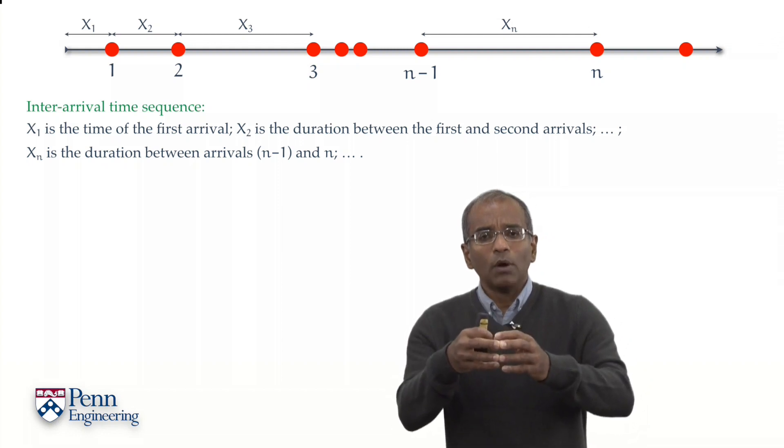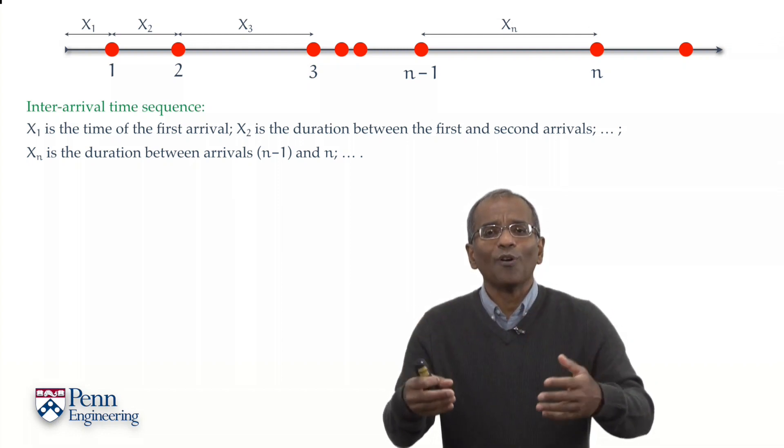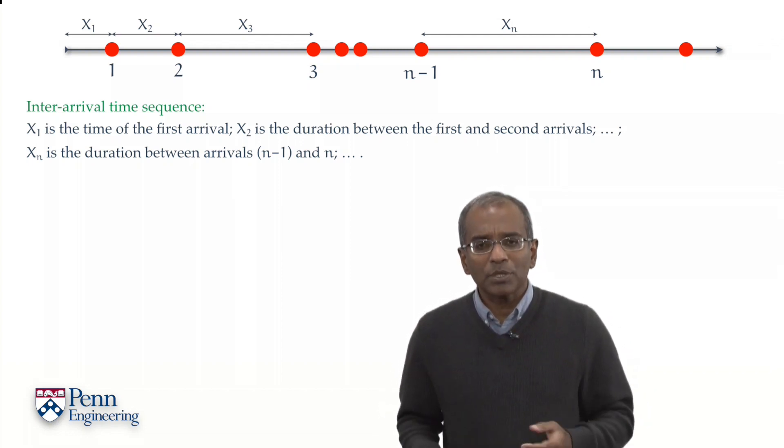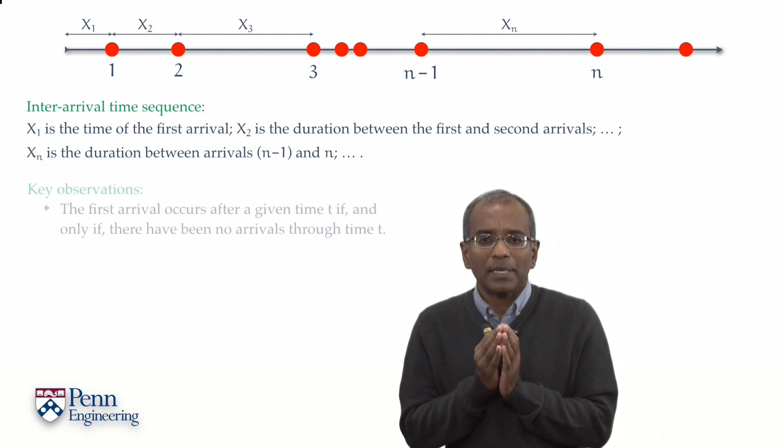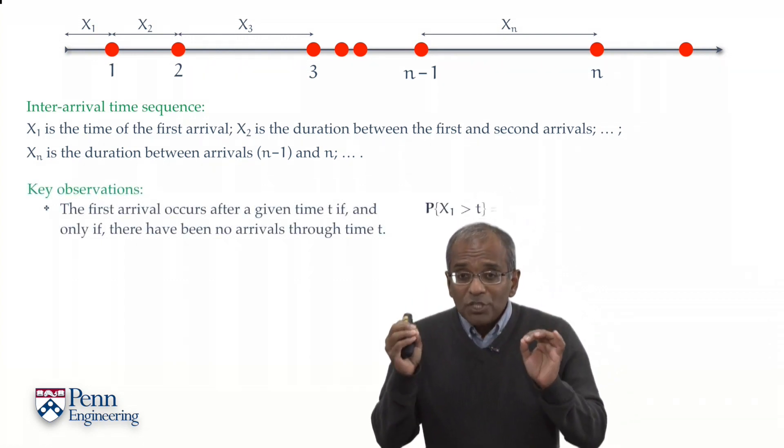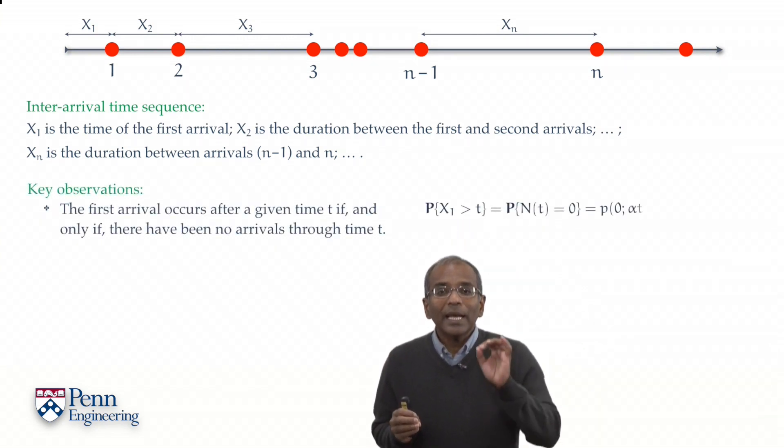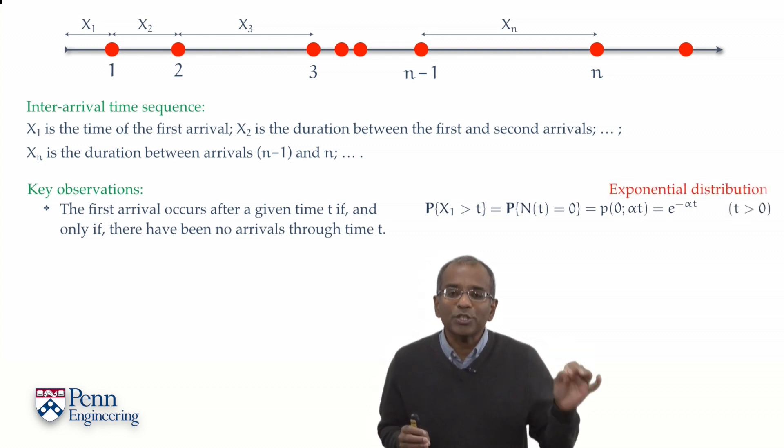Our job now is to characterize the distribution of these inter-arrival times. Let's begin with the key observation that we've already have under our belt. The first arrival is characterized by an exponential distribution.